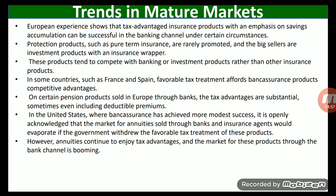In the United States, where bank assurance has achieved more modest success, it is openly acknowledged that the market for annuities sold through banks and insurance agents would evaporate if the government withdrew the favorable tax treatment of these products. However, annuities continue to enjoy tax advantages, and the market for those products through the bank channel is booming.